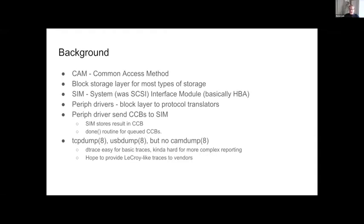CAM has a message passing model, and there are two partners in this message passing. The hardware translates protocol requests — like reading a disk block or trimming disk blocks — into something the hardware can do. It gets its messages via CCBs, which are called CAM Control Blocks. It gets those messages from the peripheral drivers, which interface to the FreeBSD block system and translate block requests into protocols like SD cards, SATA, SAS, or NVMe, handing them off to the SIM via a filled-in CCB.